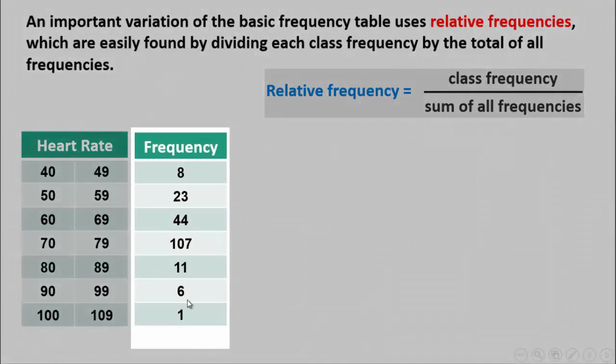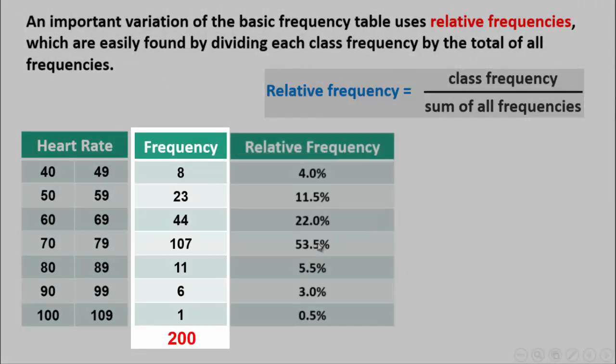The frequency of each class and the total is 200. If you add up 8 plus 23 plus 44 plus 107 plus 11 plus 6 plus 1, that's 200.